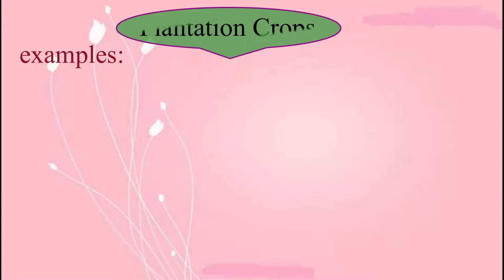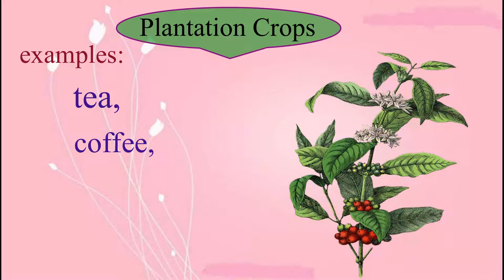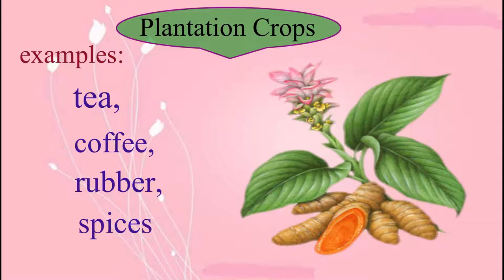Plantation crops are the crops which are grown on a very large scale. For example, tea, coffee, rubber, spices, etc.